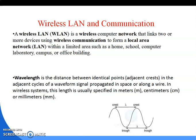In a wireless system, signals or electromagnetic signals are generated and move in the form of waves. The wavelength is the distance between identical points — that is, between adjacent crests in adjacent cycles of a waveform signal propagated in space or along a wire. In wireless systems, this length is usually specified in meters, centimeters, or millimeters. In short, wavelength is the distance between two crests or two troughs.